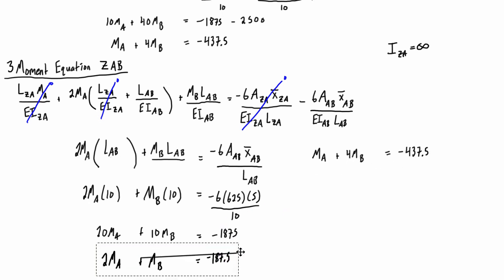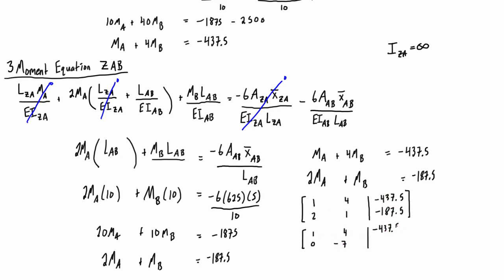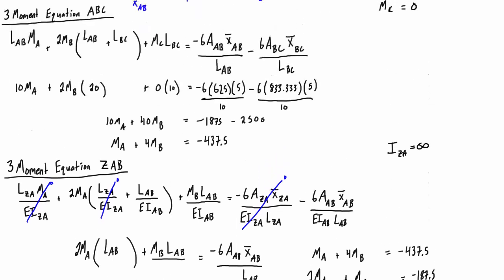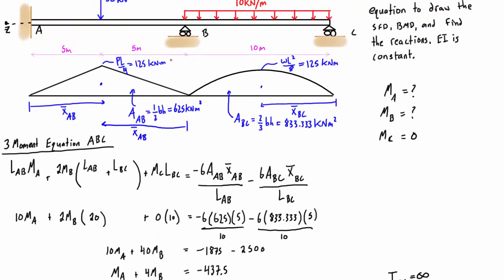Alright, so now we have two equations and two unknowns. And you can either solve this by just simple substitution or using a 2 by 2 augmented matrix. And we're going to find out that MA is equal to negative 44.643, and MB is equal to negative 98.214. And those are the internal moments right at those reactions, basically at these points.